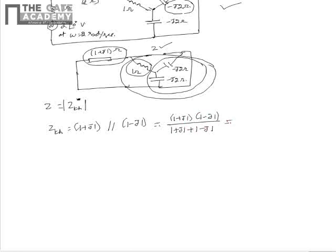So we see that this is equal to 2 divided by 2 that is equal to 1 ohm. From this we see that for maximum power transfer to the circuit, Z is equal to absolute value of Zth is equal to 1 ohm.